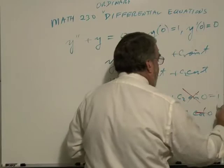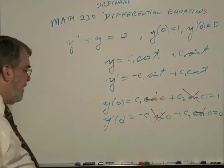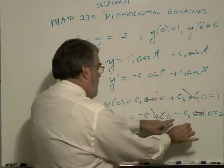Again, initial position was one, initial velocity was zero. So when you look here, you say, well, okay, well, c1 equals one. And c2 has to be equal to zero.